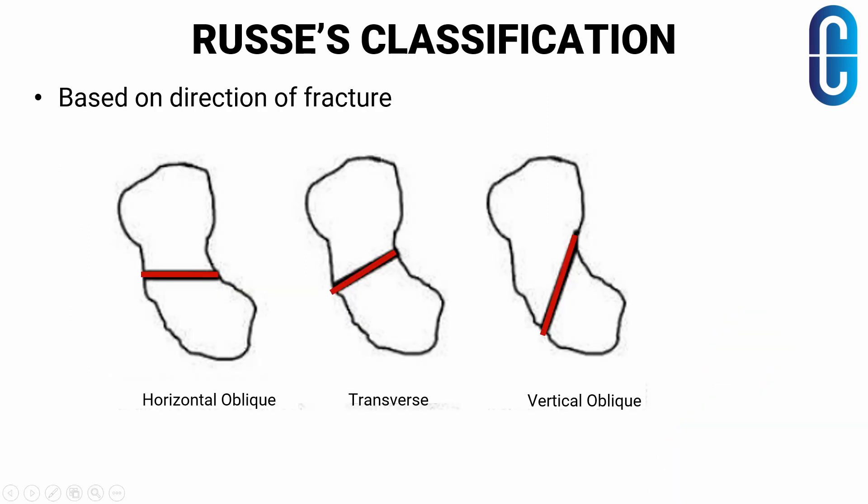Next we have the Russe classification, where based on the direction of fracture there is horizontal oblique, transverse, and vertical oblique.